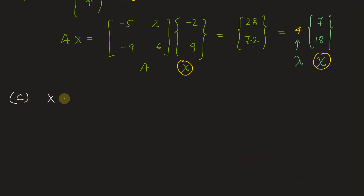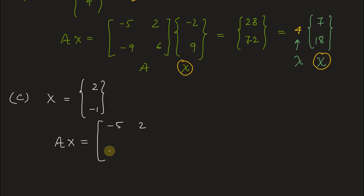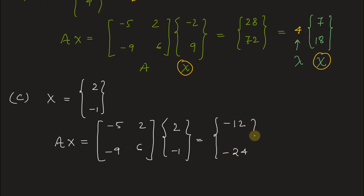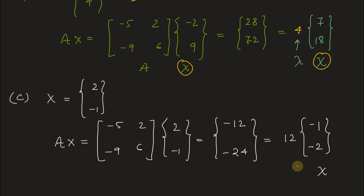Now let's check option C, where the eigenvector x = [2, -1]. Finding Ax: A×[2, -1] gives [(-5)×2 + 2×(-1), (-9)×2 + 6×(-1)] = [-12, -24]. Taking 12 common, we get 12×[-1, -2]. Since this value of x = [-1, -2] does not match the assumed x = [2, -1], option C is also incorrect.